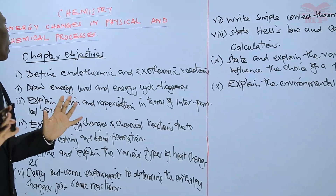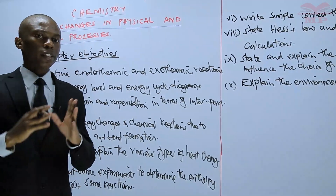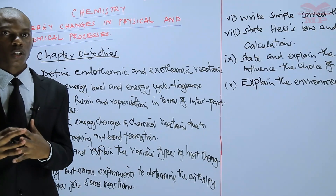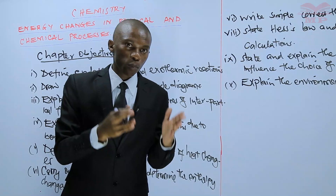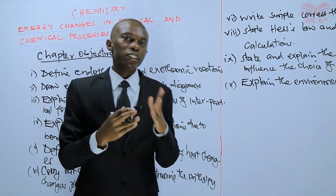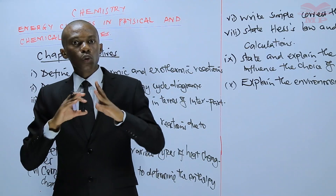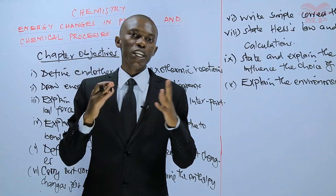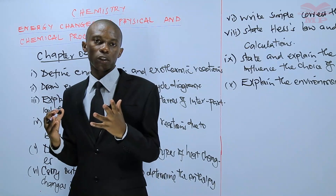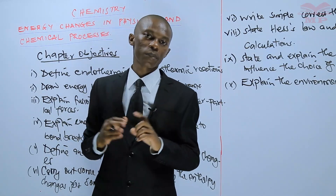The topic is energy changes in physical and chemical processes. If you remember, in Form 1, the second topic — simple classification of substances — we talked about temporary and permanent changes. Temporary changes are those changes which do not lead to the formation of new substances, while permanent changes are those changes which involve the formation of new substances.